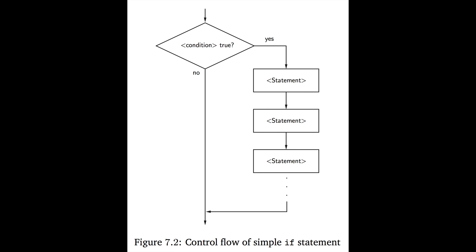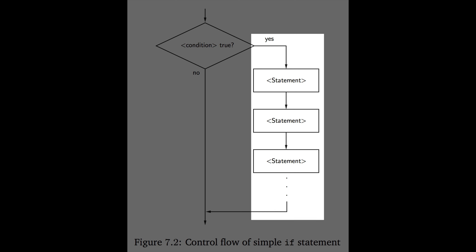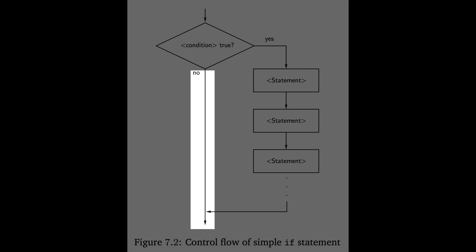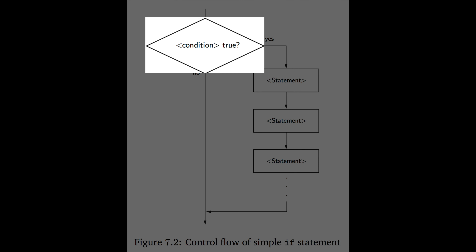Here is a flowchart representation of that. We check the condition specified in the if statement. If it is true, we execute the statements that are indented below the if statement and continue afterwards. If the condition is false, we skip those indented statements. Note that decision statements are written in flowcharts using a diamond shape, while other statements are written using rectangles.